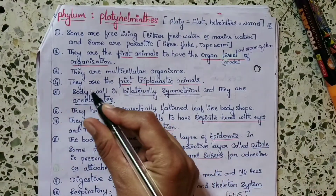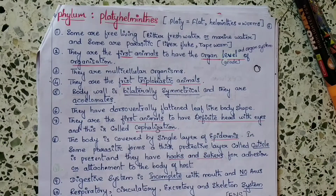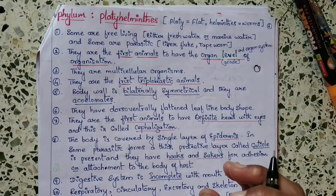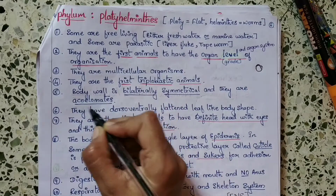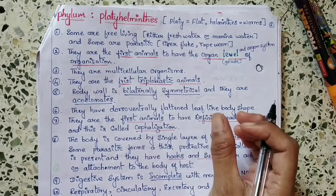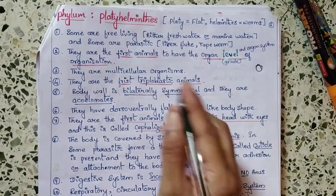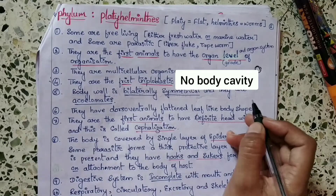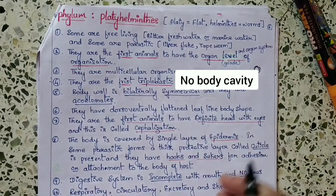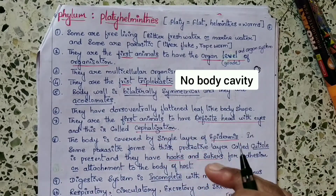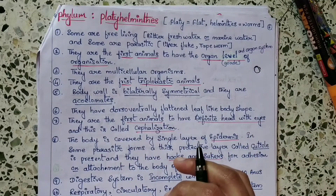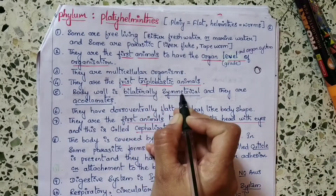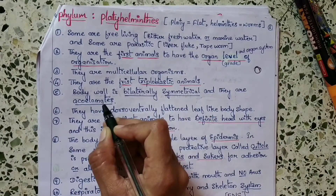They are acoelomates. Acoelomate means the body cavity is filled with cells. The organisms which have no true body cavity — in this case, Platyhelminthes are acoelomates, meaning they don't have a body cavity; that body cavity space is filled with cells.